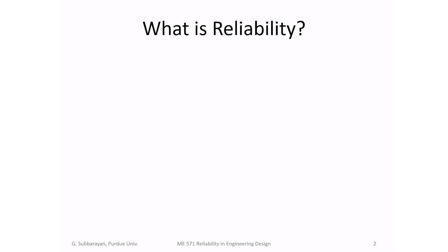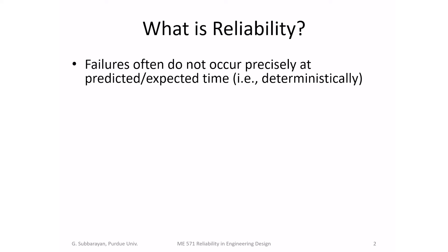We will begin with the question: what is reliability? Before I answer that, I'll start with the observation that if I take a product — mechanical, electronic, aerospace, or civil — any physical system, what we notice is that failures do not occur at a precise time. There is uncertainty, there is randomness. If failures were to occur at a precisely predicted time, we would call that a deterministic failure mechanism.